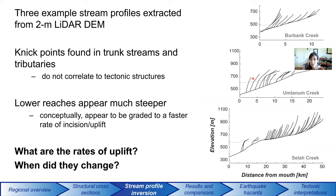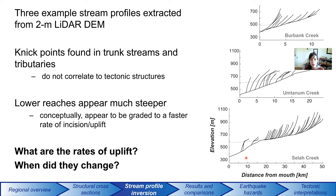When we look at the actual streams coming off the individual structures in the Yakima Canyon, derived from two-meter LIDAR digital elevation models — Selah Creek, Umtanum Creek, and Burbank Creek — we do see non-equilibrium rivers with a bunch of changes in steepness. We find nick points in trunk streams and also in the tributaries. When we compare them to mapped structures, they don't correlate very well, which suggests that the lower reaches of many of these streams appear to be graded to a faster rate of incision and uplift. The important questions are: what are those rates of uplift, and when did they change?